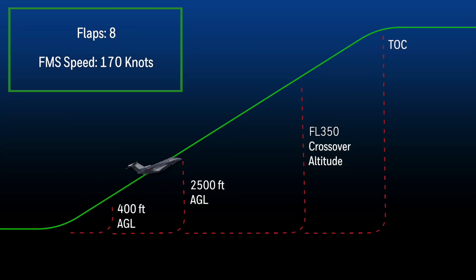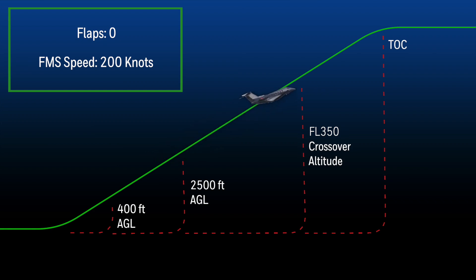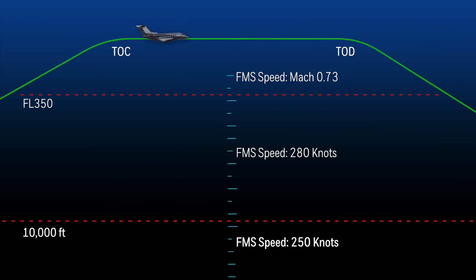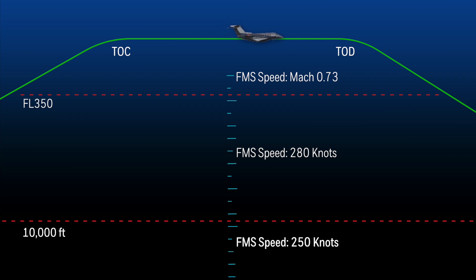As the aircraft continues the climb 2 altitude, the FMS target speed changes to Mach 0.60 at approximately flight level 350. When the aircraft reaches the cruise altitude, the target speed changes to the cruise speed set in the altitude and speed tab in the flight management window.